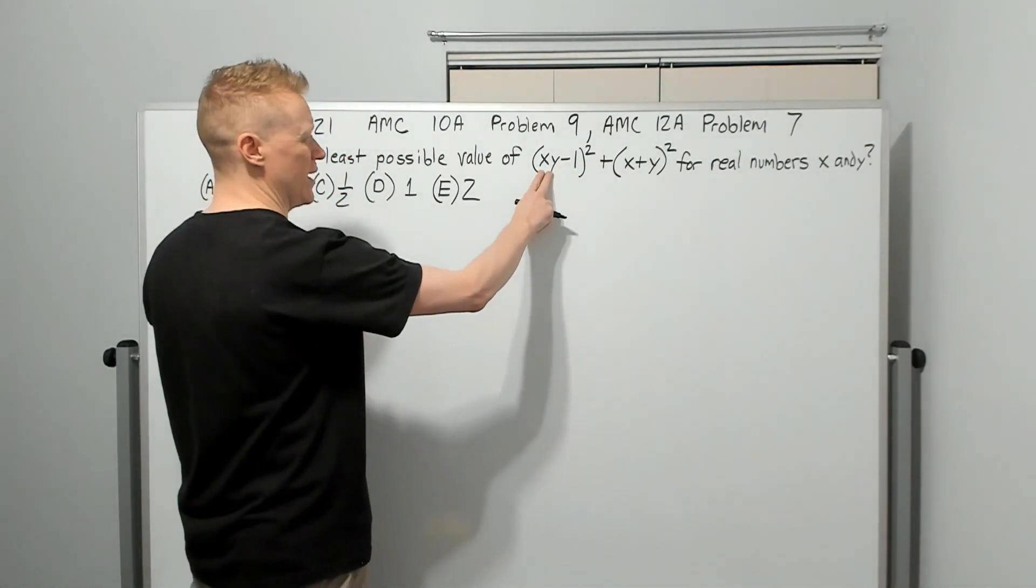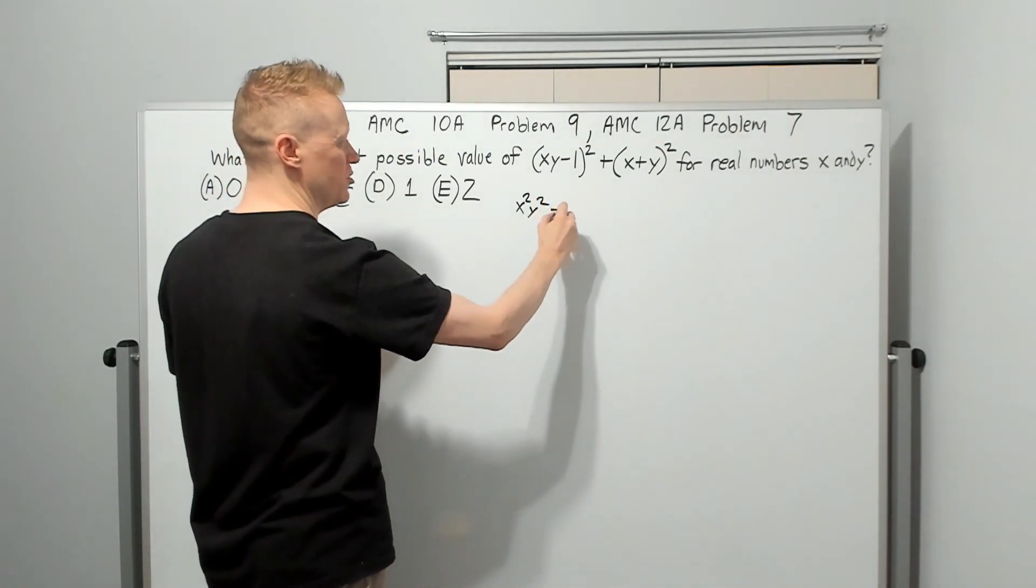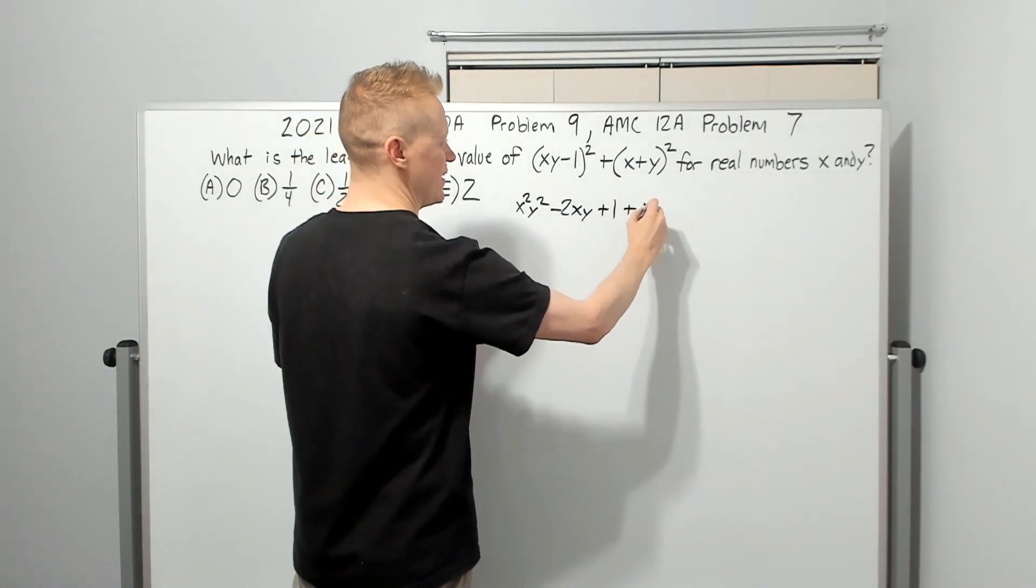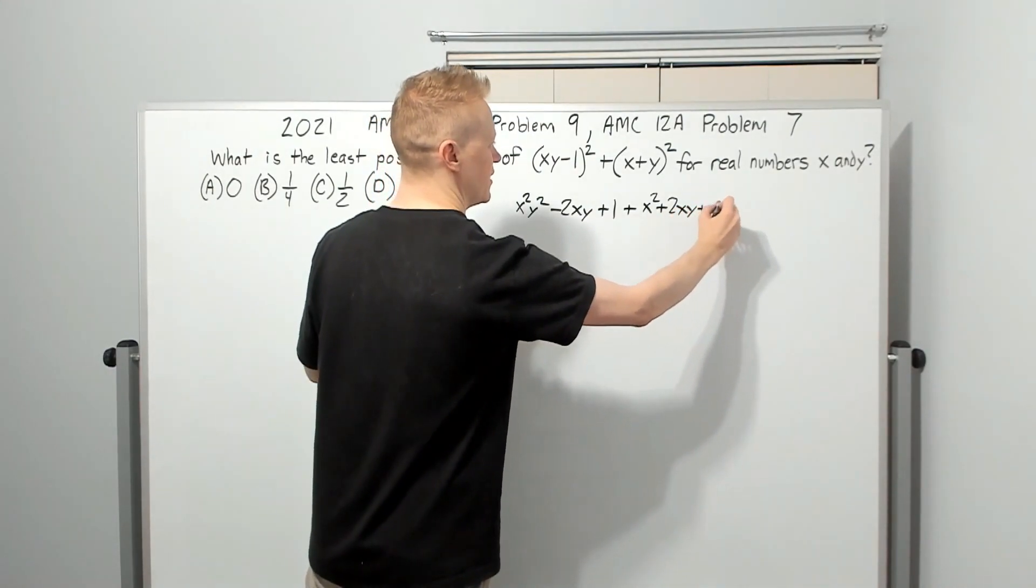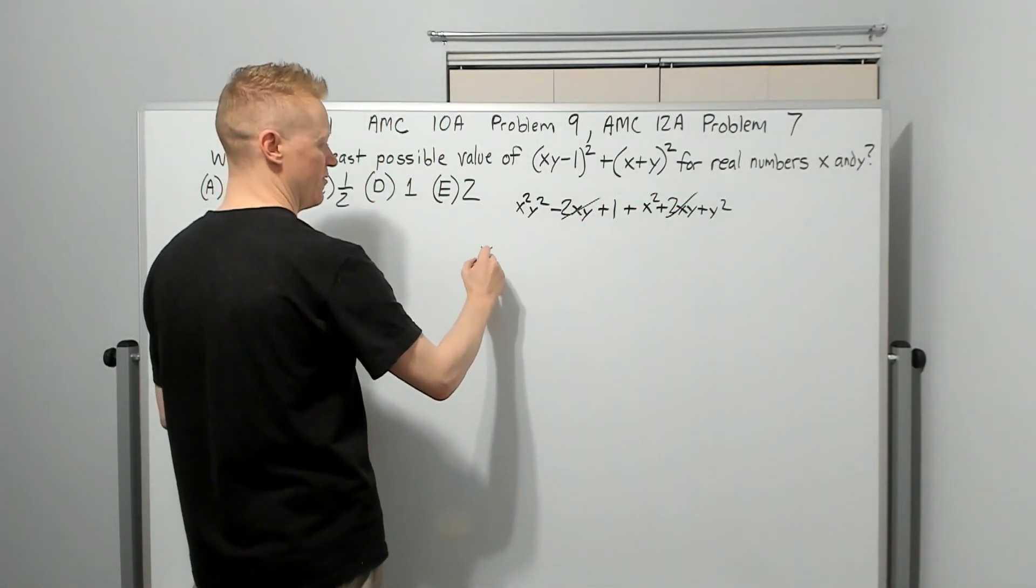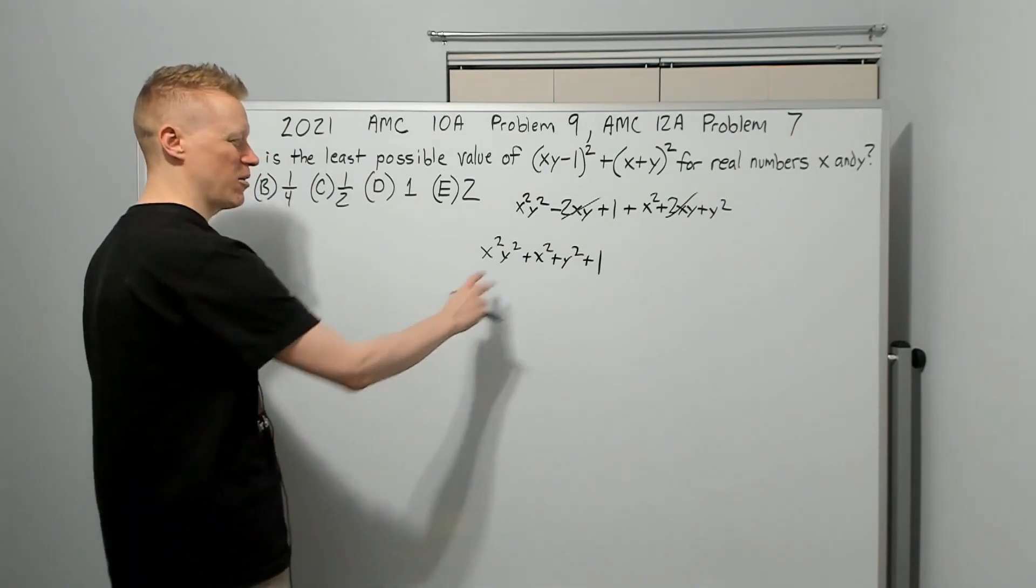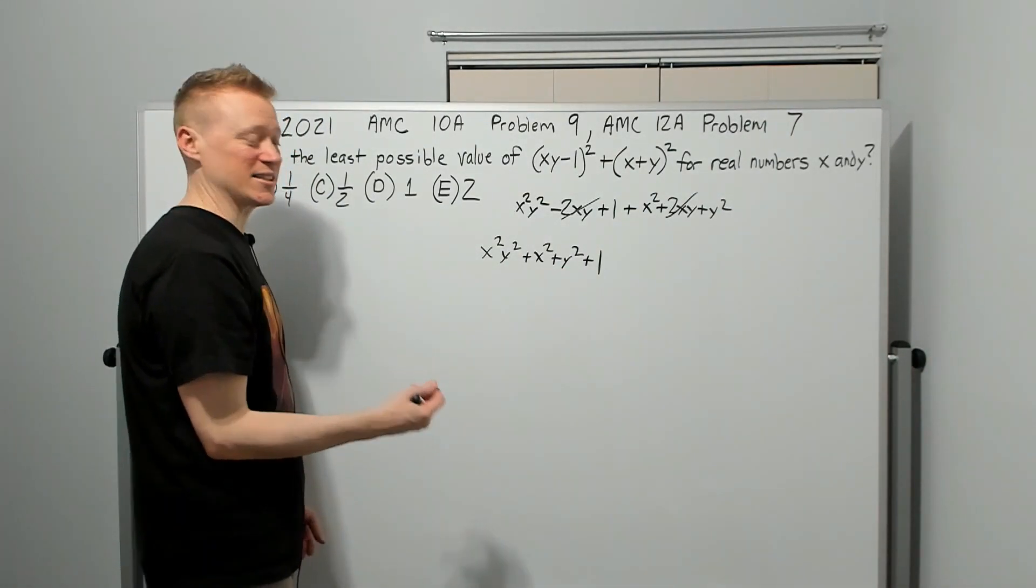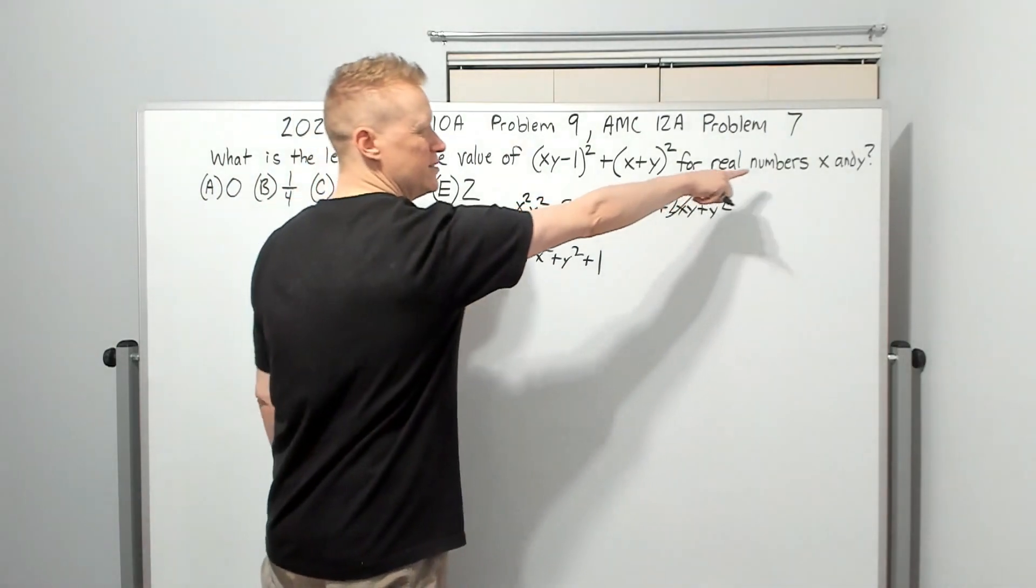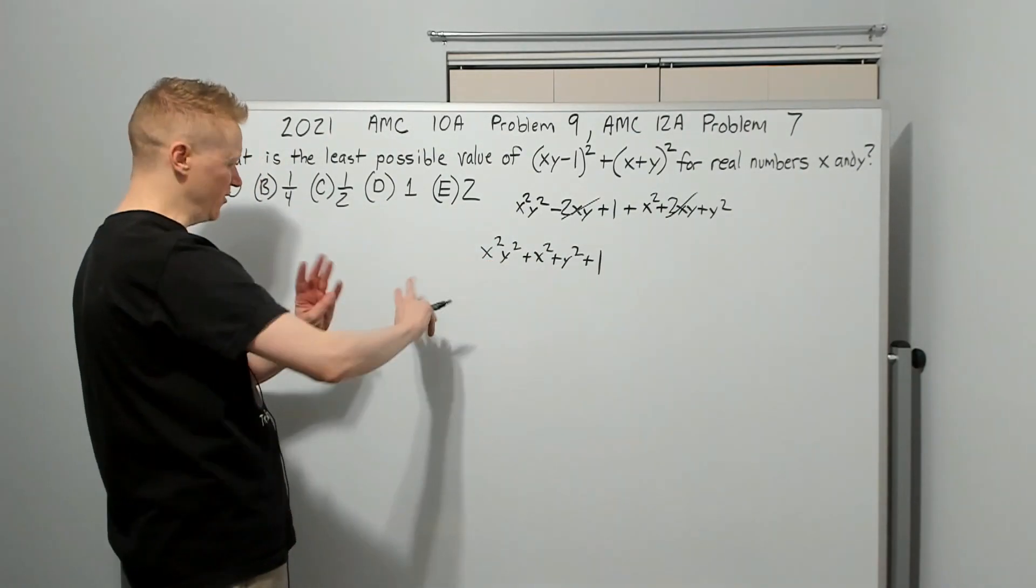It's not that hard to expand these. XY squared is going to be X squared Y squared. This times this times 2 is minus 2XY. Negative 1 times negative 1 is plus 1. This one expanded is X squared plus 2XY plus Y squared. Look at negative, positive, goodbye XY terms. And then we have X squared Y squared plus X squared plus Y squared plus 1. I wrote the squareds first because now we can actually think about it. The 1 is not in the middle of a square.